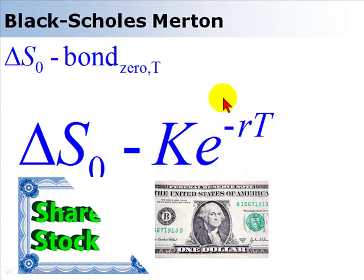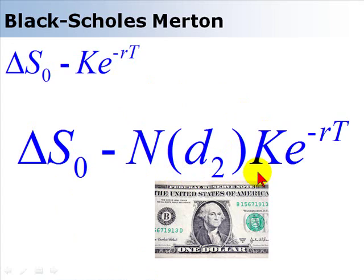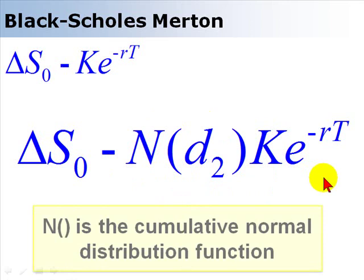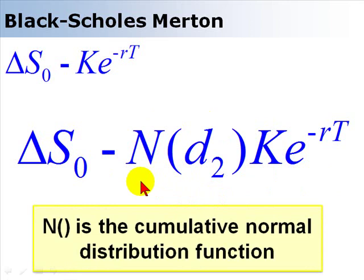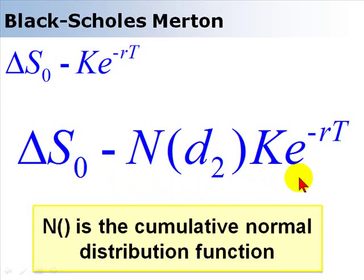We've converted the short position in the bond to what we could call the discounted or present value of the strike price. But we don't want the whole strike price — we multiply by the cumulative normal distribution function N, which represents the probability that the option will be exercised. So on the right we have a probability-adjusted discounted strike price: the strike price discounted to today, adjusted for the probability that the option will be exercised. That handles the short position in the bond.